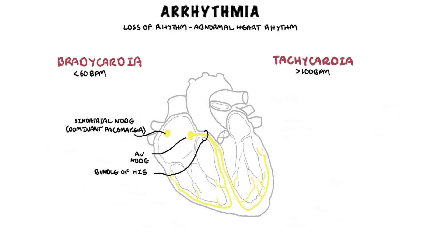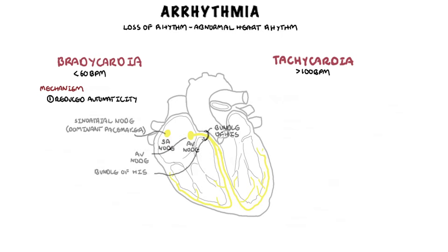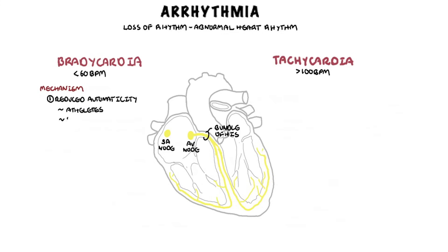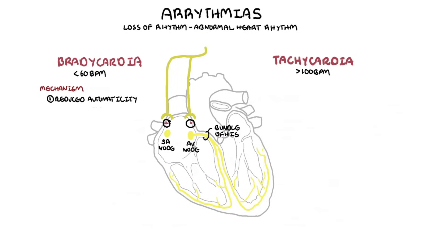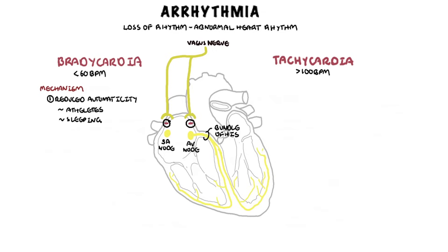The main mechanisms of bradycardia can be broadly divided into two groups. The first is reduced automaticity — the reduced automatic firing of the SA node — and this is usually due to an increase in vagal tone, or increase in vagus nerve stimulation. The vagus nerve is a long nerve from the brainstem that affects the heart rate; it essentially slows it down. Elite athletes have an increase in vagal tone and so have a low resting heart rate. When we sleep, our body naturally has a low heart rate too, because of this mechanism.